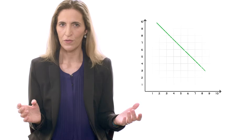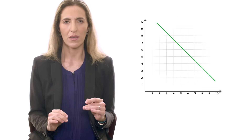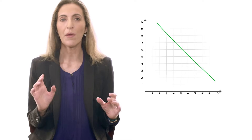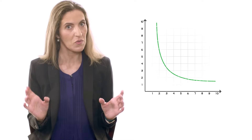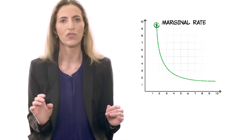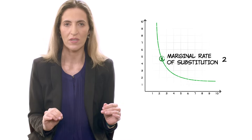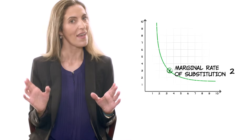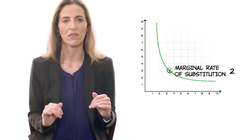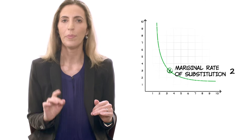Most indifference curves look just like the one in our example — they are bowed inward. This is because the marginal rate of substitution changes depending on how much of the goods you have and your willingness to substitute between them. But there are exceptions, and indifference curves can look very different.